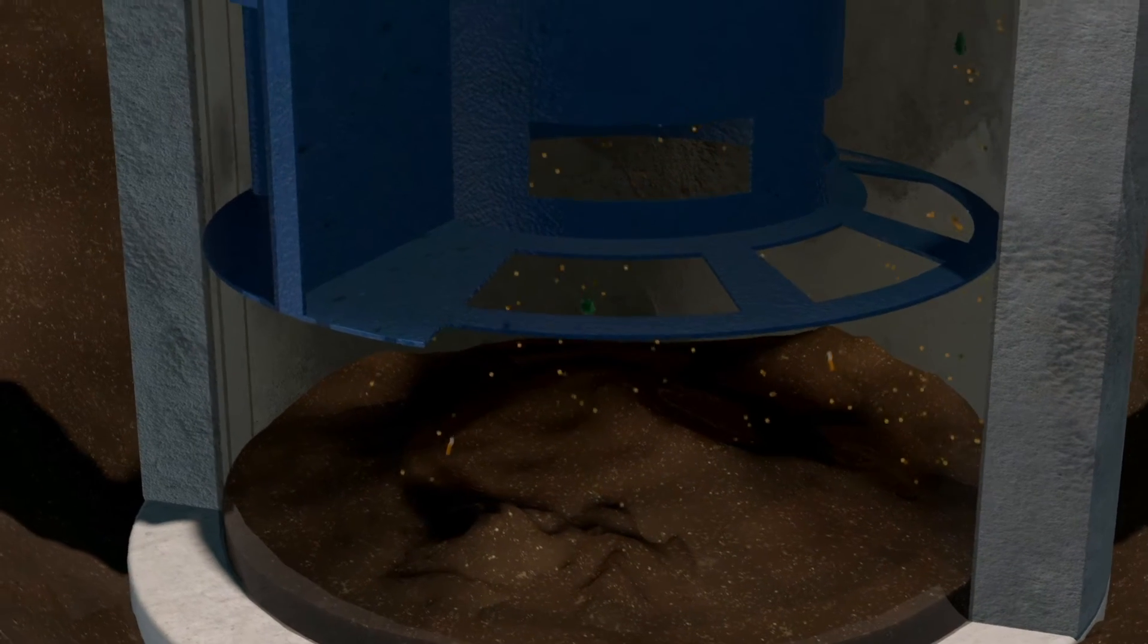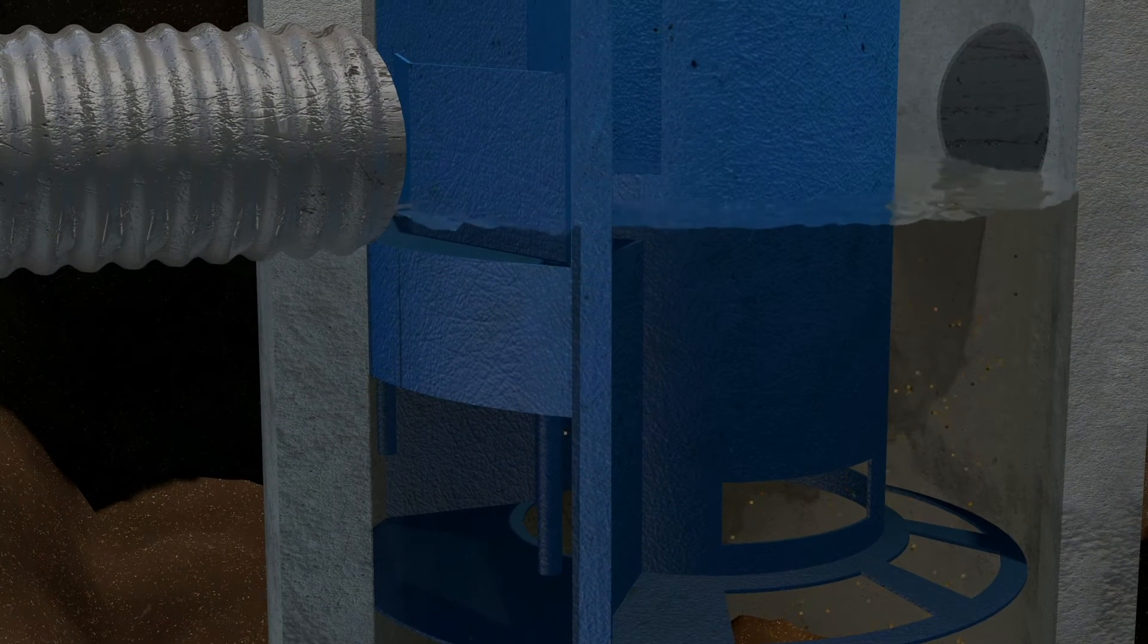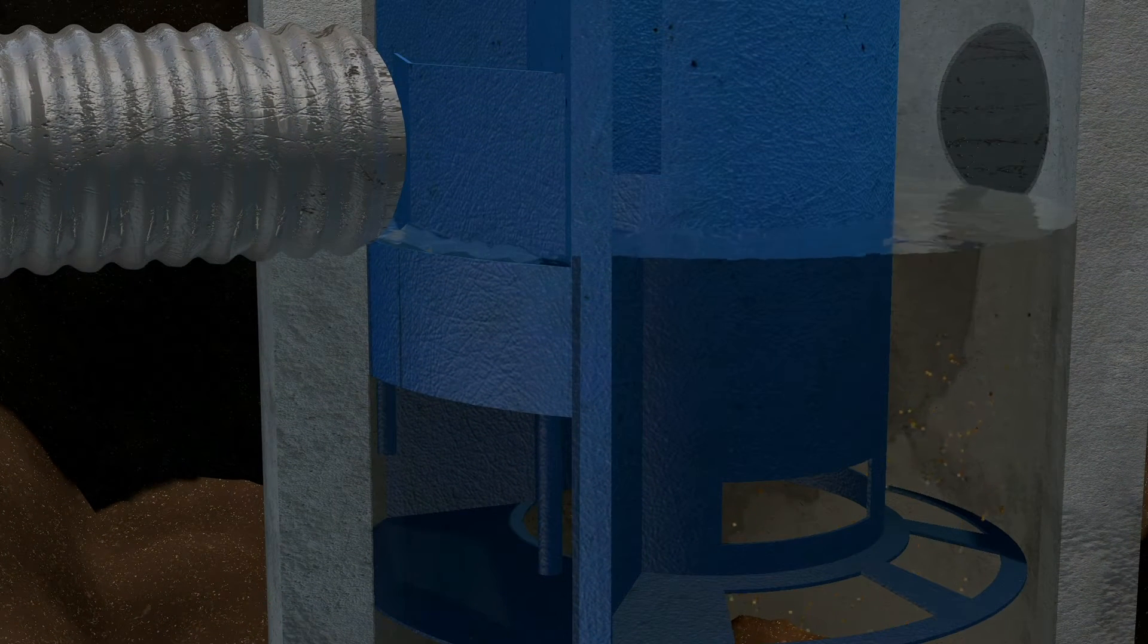After the storm event subsides, two drain down pipes allow the water surface elevation inside of the structure to fall until it reaches the outlet pipe invert elevation.